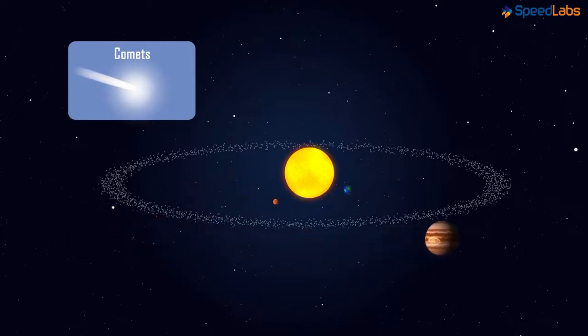When they orbit near the sun, their appearance looks like a huge head with a tail. Actually two tails where one is called a dust tail and the other one an ion tail.